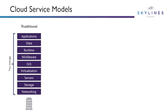If we look at the traditional way, this is what we would deploy in our data center — the stack that we have to manage. From networking through storage, servers, and often a virtualization layer, an operating system, middleware, runtime, and data applications — all of this we would manage and maintain in the data center.